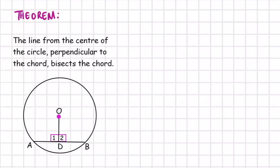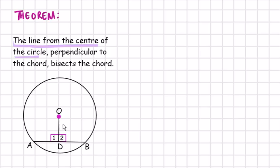Hey guys and welcome to this video. In this video we'll be proving one of the grade 11 circle theorems. The theorem states that the line from the center of the circle perpendicular to the chord bisects the chord. So we can see that line OD runs from the center and is perpendicular to chord AB, and what it does is bisect the chord.